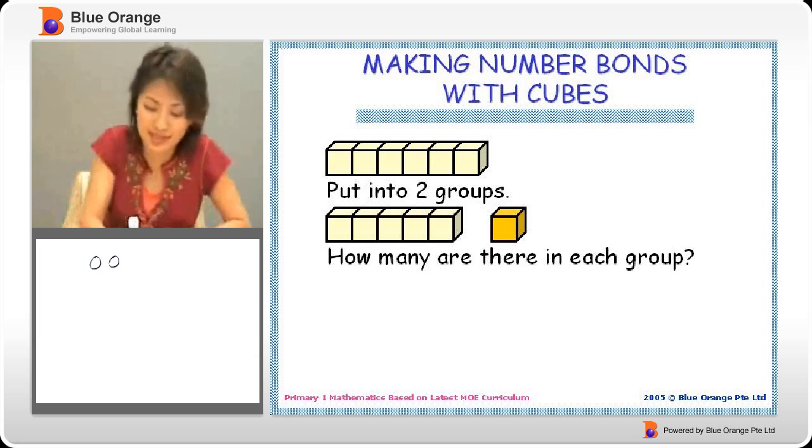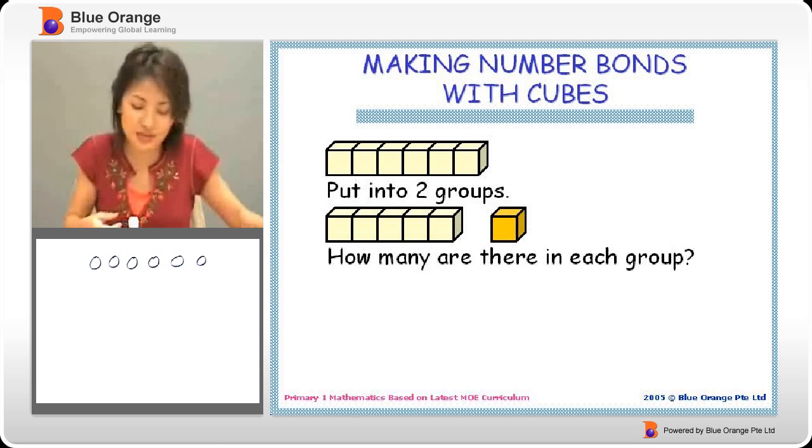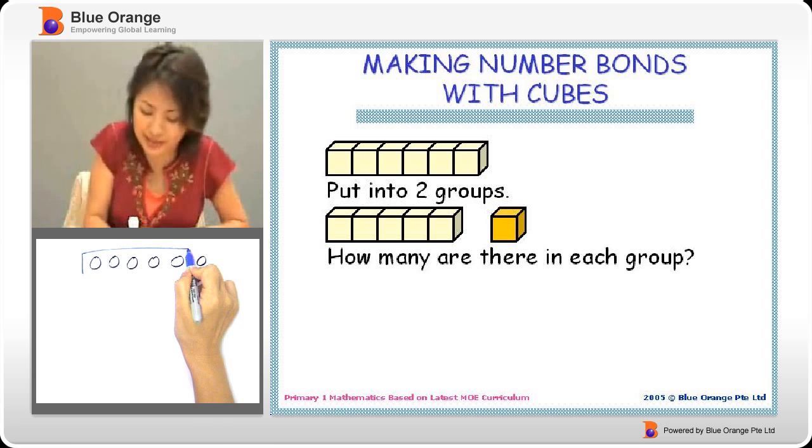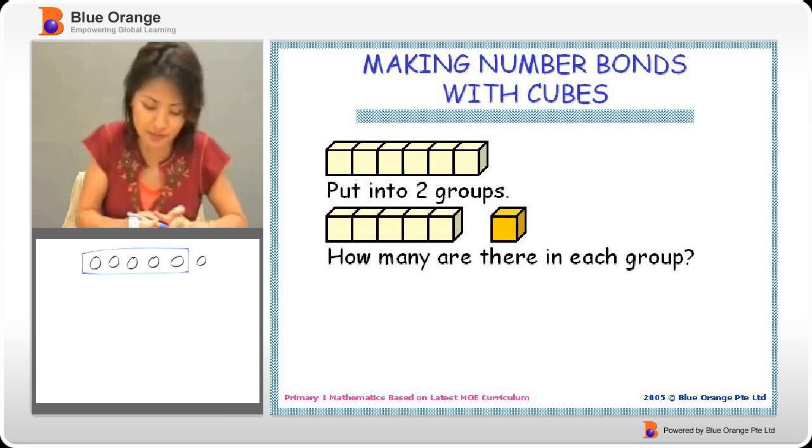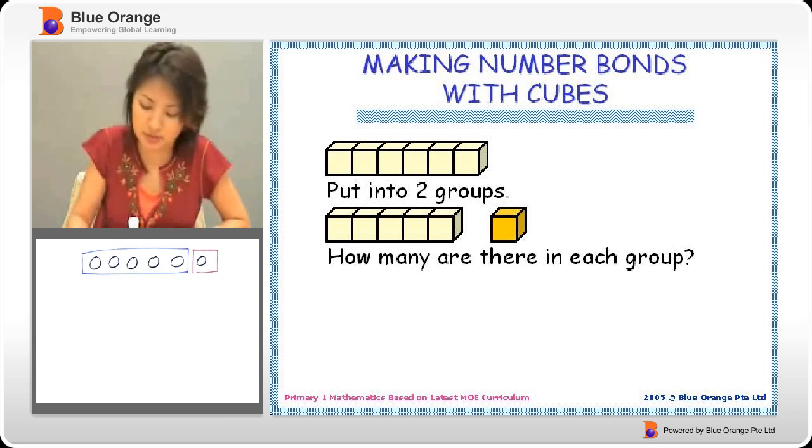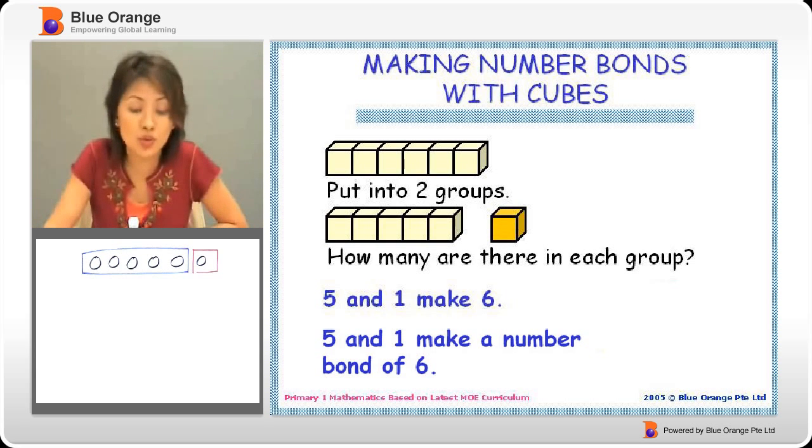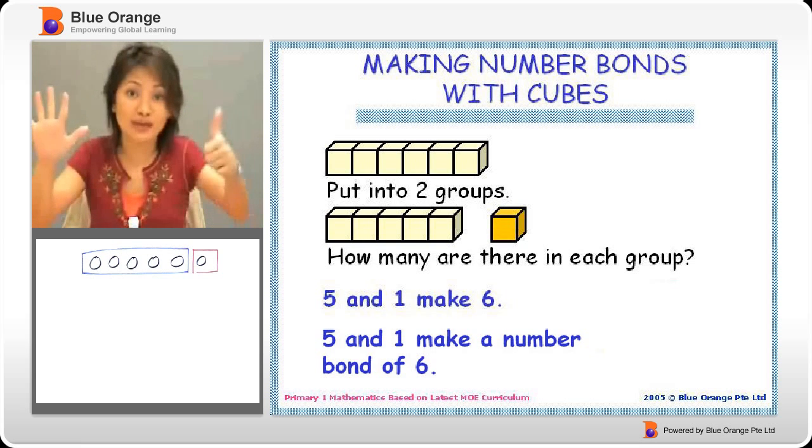So, from the sixth, one, two, three, four, five, six. I've taken out and then I've made them into two groups like that. So, we can say that five and one make six, right? We have five and one make six.